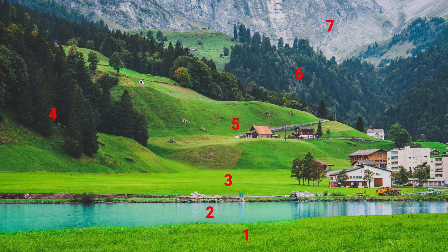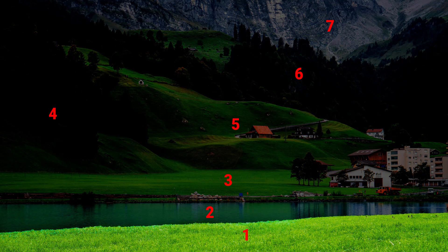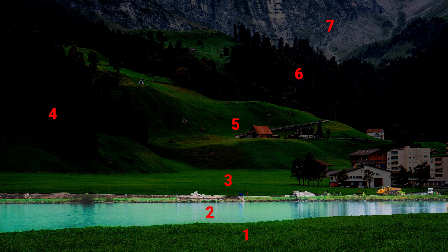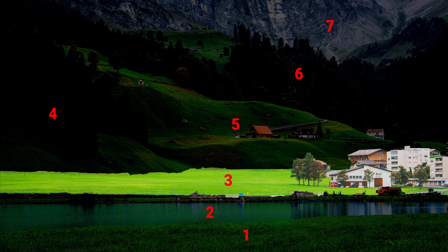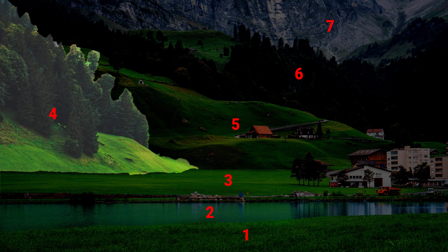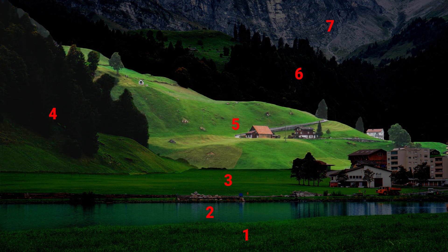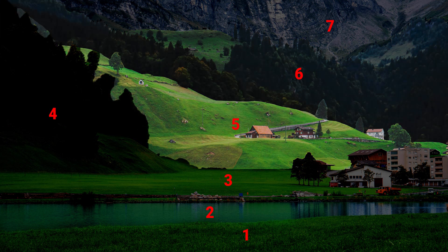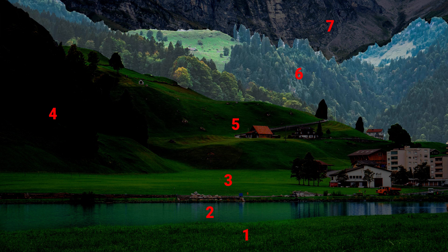The first thing we need to do is analyze this photo. What do you see in the photo that's closest to the camera? Yep, it's definitely the long grass at the bottom. We're going to divide the photo into five or six areas with similar distances from the camera. Here's how I'm dividing it.